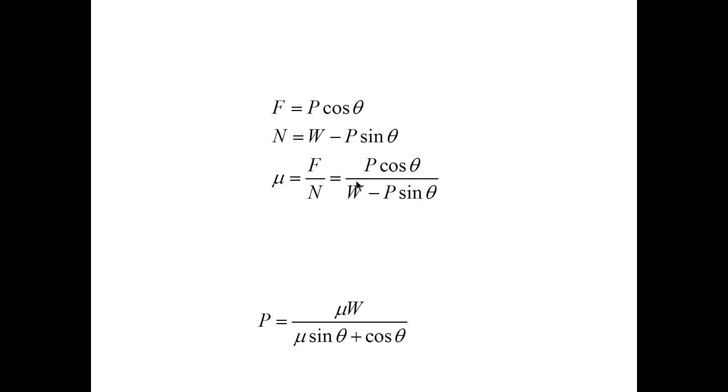Theta is to be determined from the optimality condition by minimizing P. To this end, all we have to do is find the derivative of P, and it is given here, and set it equal to 0. Then we see that the derivative is equal to 0 when mu is equal to tangent theta,